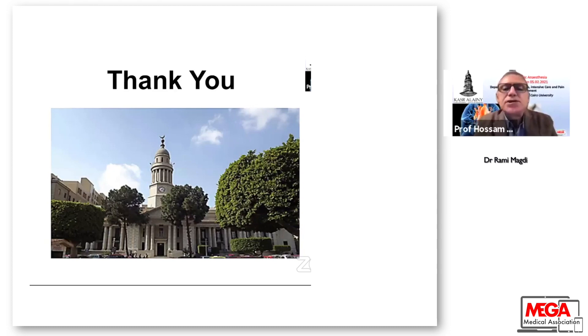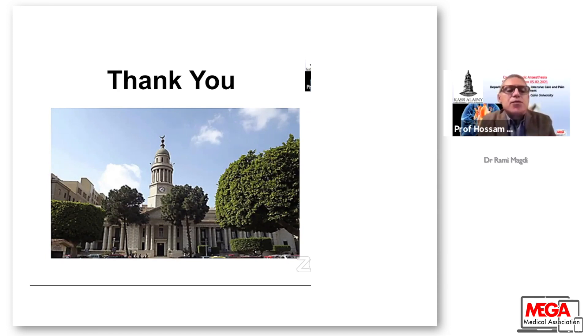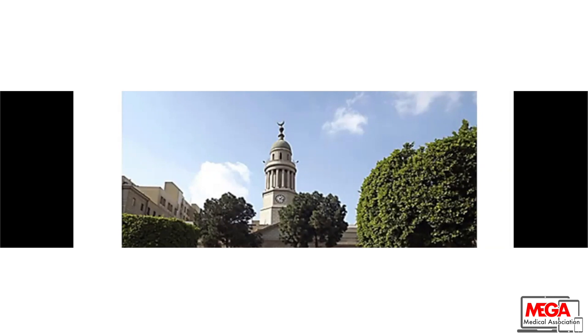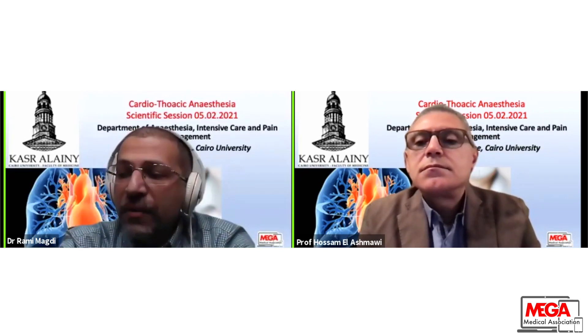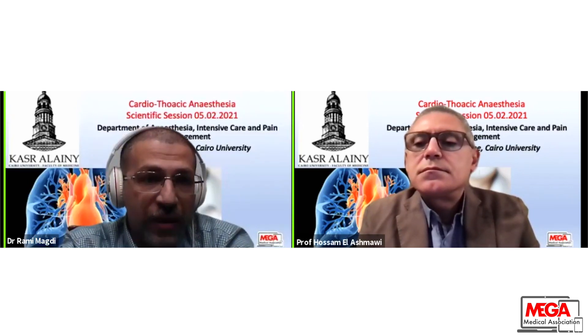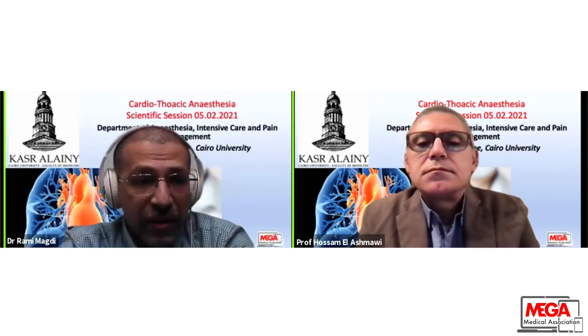Thank you, Dr. Rami, very nice presentation. We have a question from the audience: how do you diagnose vasopressia in your practice? Hypotension has many causes. In cardiac surgery, there is a basic equation to calculate systemic vascular resistance, which equals mean arterial pressure minus central venous pressure, divided by cardiac output (the flow of the main pump), multiplied by 80 — this gives a figure for systemic vascular resistance.